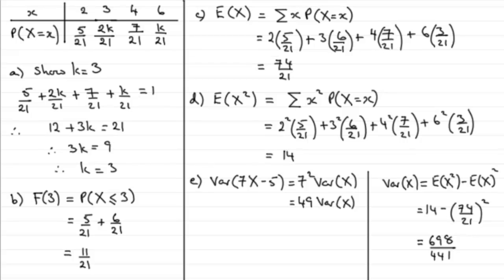So we can put this result into here. And if we do, we've just got to do 49 multiplied by 698 over 441. And if you do that, you end up with 77 and 5 ninths.